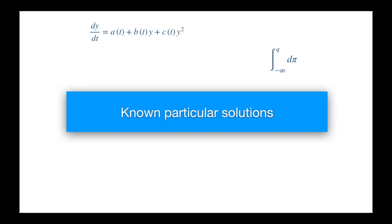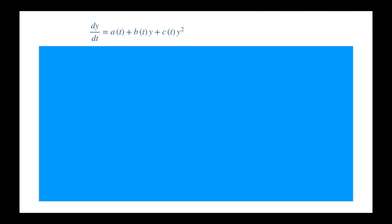Or you might know the solution through some other sources, like books or friends in high places. I know it's not easy, but the rewards are great, because if you know a particular solution of the Riccati, then determining the general solution is quite easy. Let's see, because seeing is believing. Assume we know particular solution y1. Now consider this change of variable — we set y equal to y1, the particular solution, plus another variable z. Let's remove the dependence on t to save space. Let's substitute this for y and expand the square term.